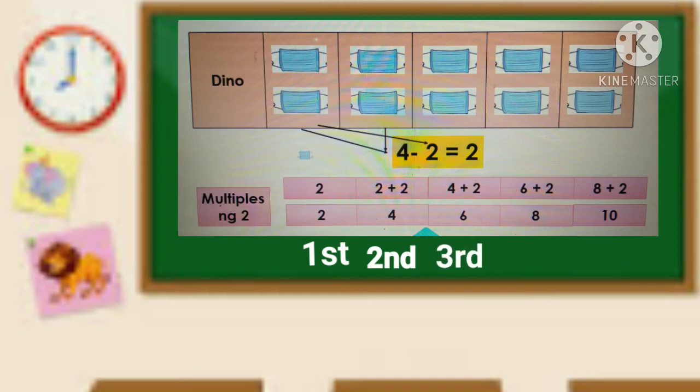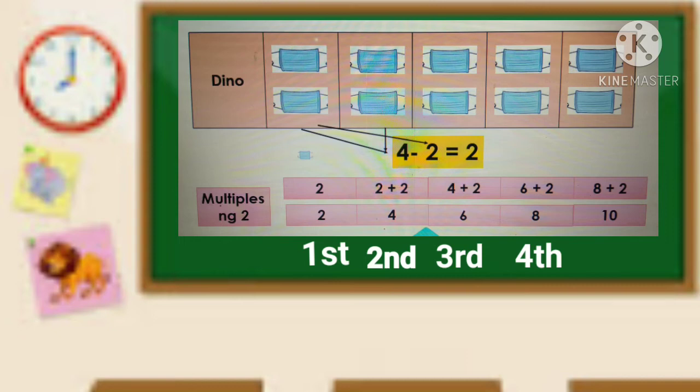Magaling! Para matukoy ang pangapat na multiple, idagdag ang common difference na 2 sa 6. So 6 plus 2 ay 8. Tama! At para matukoy ang panglimang multiple, idagdag ulit ang common difference na 2 sa 8. So 8 dagdagan ng 2, ang sagot ay 10. So ang panglima nating multiple ay 10. Ang gagaling talaga ninyo.